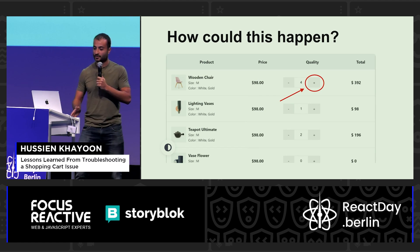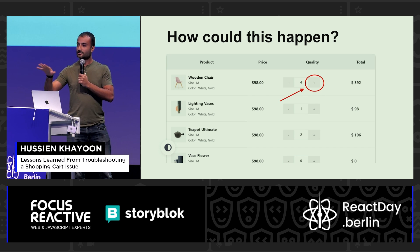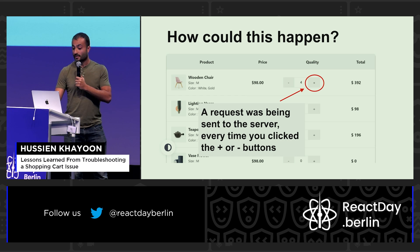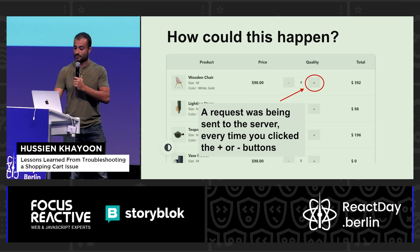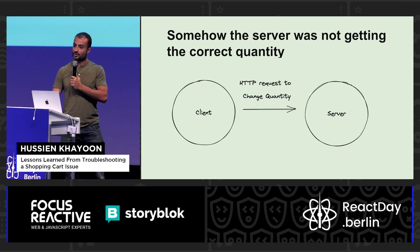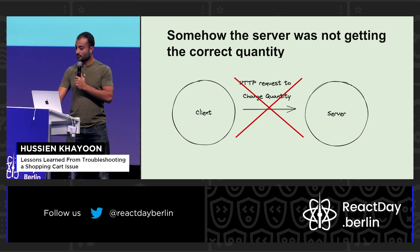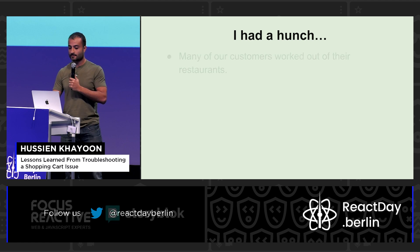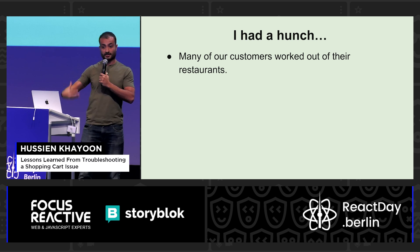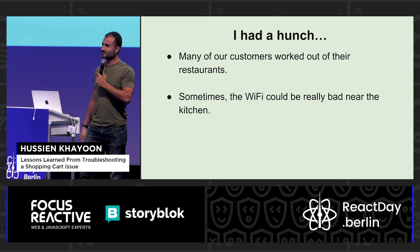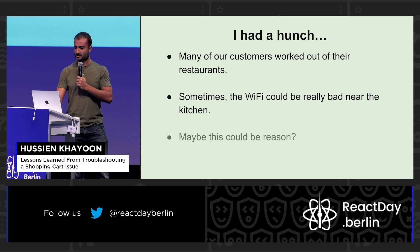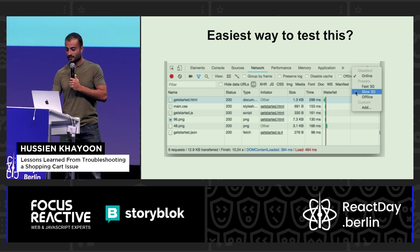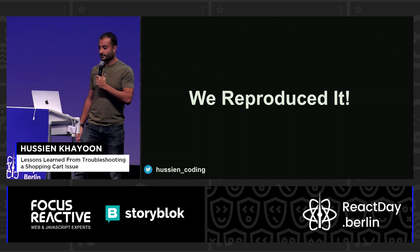So now we had to reproduce it. The customer was clicking plus, plus, plus rapidly, and every time we sent a request to the server — we were debouncing and things like that — but every time they pressed the button they were sending a request to the server. Somehow the request to change the quantity was just not getting to the server. I had a hunch because I'd visited restaurants in person and noticed their kitchen Wi-Fi is usually pretty bad. So I tried network throttling to slow 3G — and that was the problem. We were able to reproduce it.